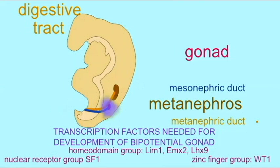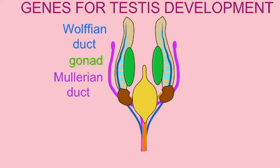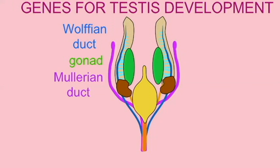These transcription factors are needed to turn on the genes which allow embryonic cells to develop into the cells of the bipotential gonad. Once an embryo develops cells of a bipotential gonad, additional transcription factors can determine either testicular or ovarian development from this bipotential gonad.